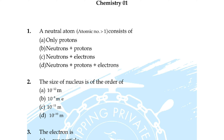Question number 20: amorphous substances show — A: short and long range order, B: short range order, C: long range order, option D: have no sharp melting point. Options are: A and C are correct, B and C are correct, C and D are correct, or B and D are correct. Correct answer is option D: B and D are correct.